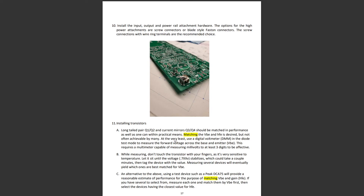At the least, use a digital voltmeter in diode test mode to measure the forward voltage across the base and emitter, also known as VBE. This requires a multimeter capable of measuring millivolts to at least three digits. While measuring, don't touch the transistor with your fingers as it's very sensitive to temperature — let it sit until the voltage stabilizes, which could take a couple of minutes, then tag the device with the value. As an alternative, use a device such as the PEAK DCA75, which provides a reasonable estimate of VBE and HFE. Measure each one and match by VBE first, then select devices with the closest HFE value.